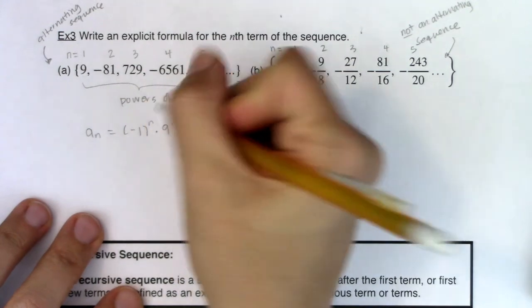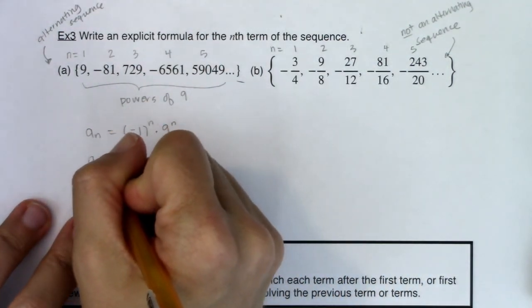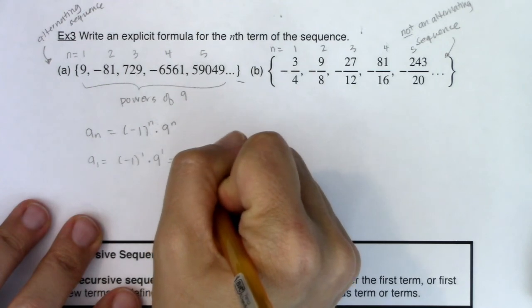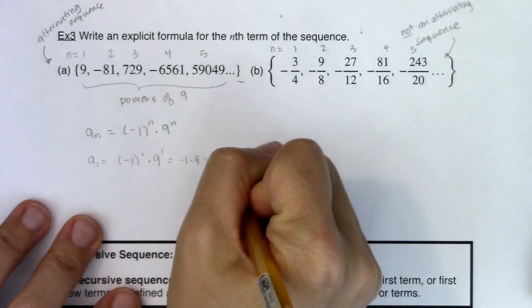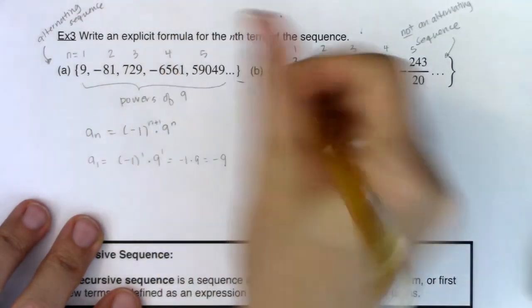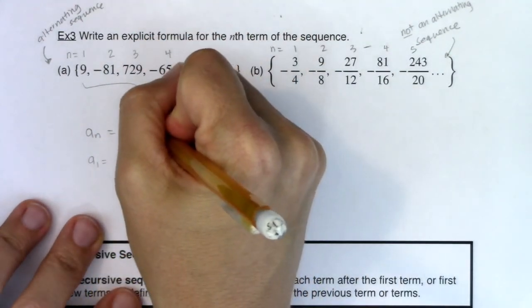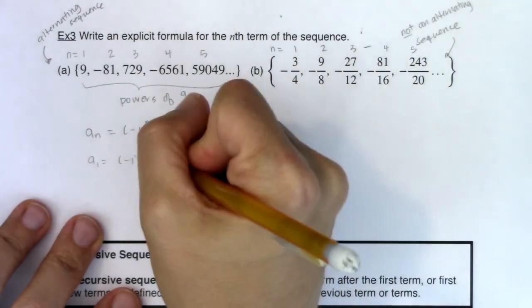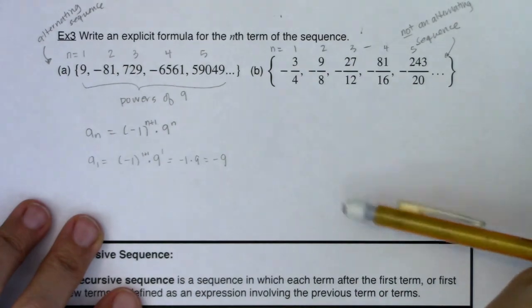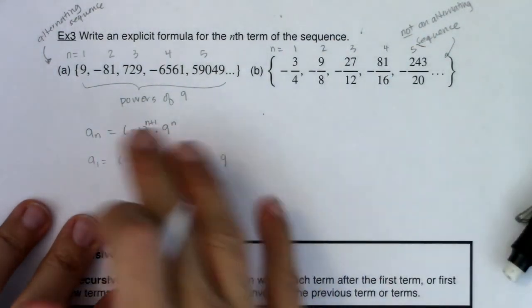Let's just take a look and see if n works. If we were to go with n, what would a sub 1 give me? This would be negative 1 to the 1 times 9 to the 1, and that would be negative 1 times 9 which is negative 9, and that does not work because my lead term is not negative. So let's change this to plus 1. If I had n plus 1 here, this would be 1 plus 1, that would become negative 1 squared which would be positive 1, and 1 times 9 would be positive 9. So that is working.